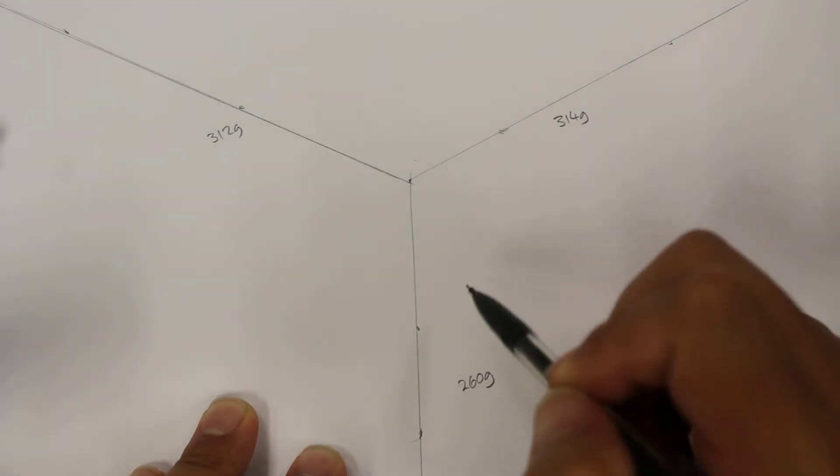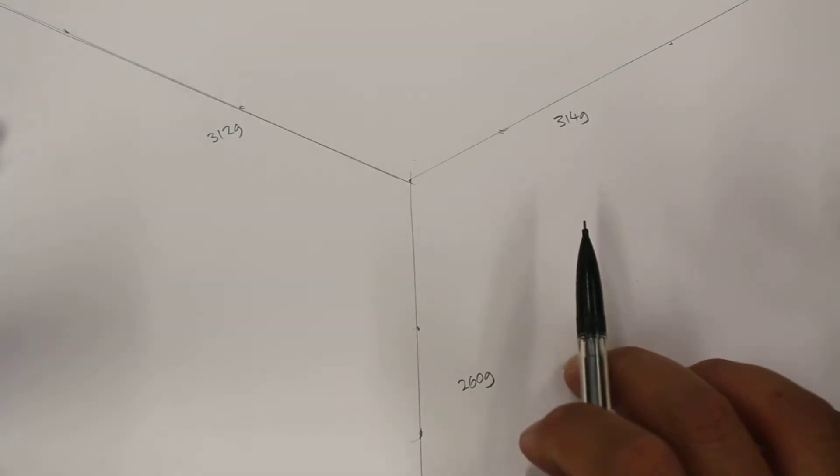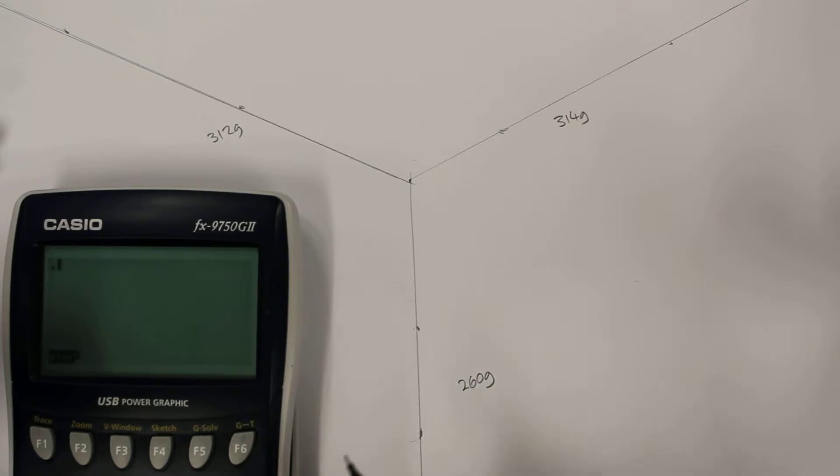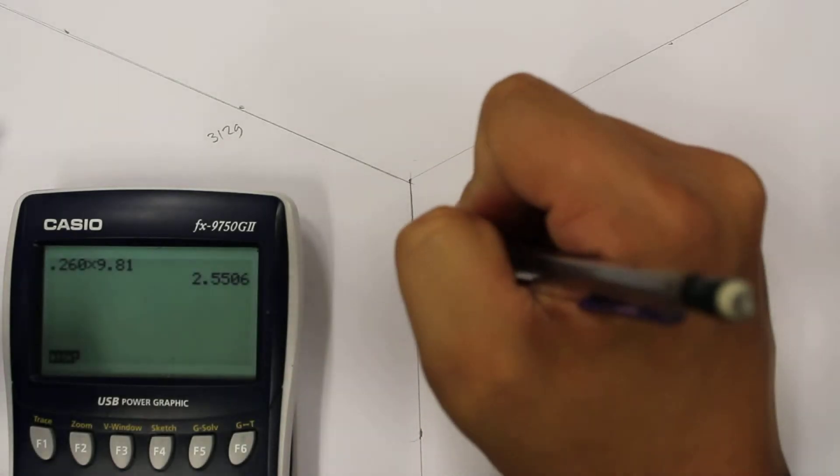Now from each one of these masses we can calculate the force. So the force here going down would be 0.260 kilograms multiplied by 9.81 and the downwards force will be equal to 2.55 newtons.